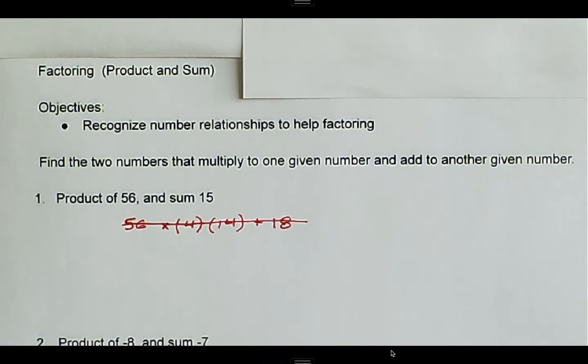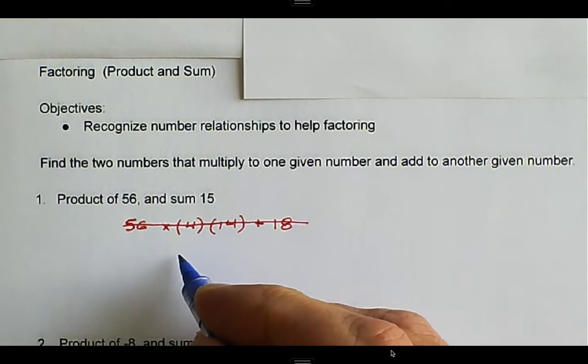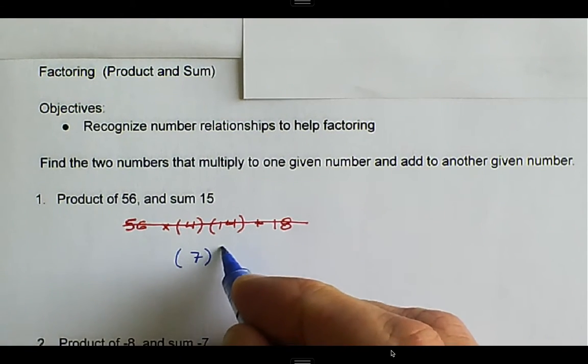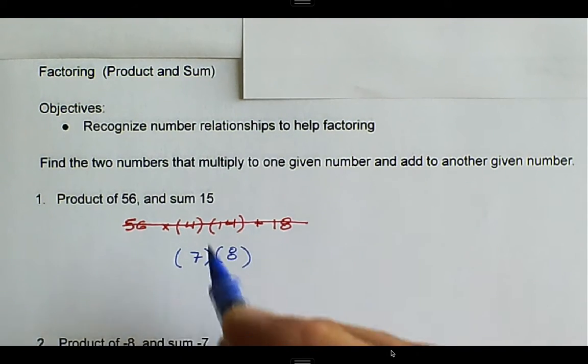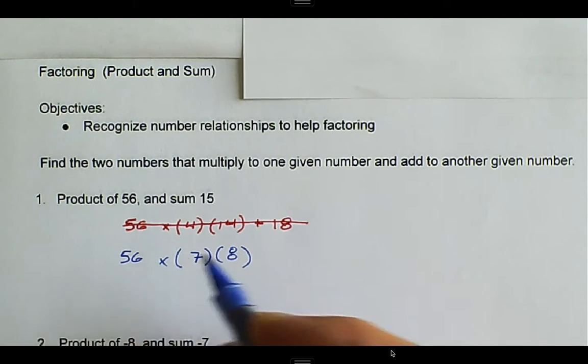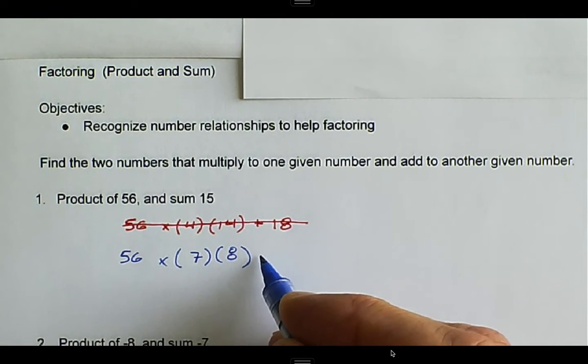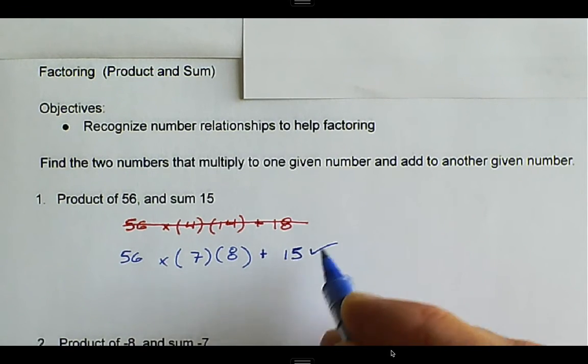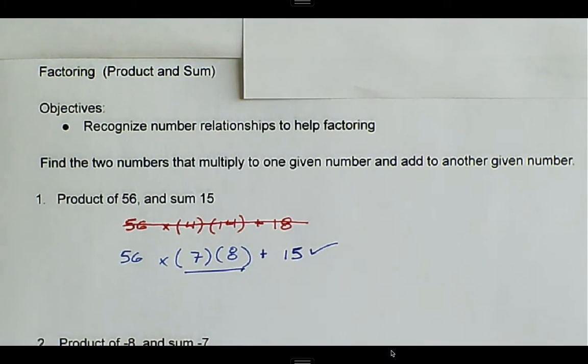We have to try it again. Two other numbers that we could try, in this case, we're going to try 7 and 8. 7 multiplied by 8 is still 56, and 7 plus 8 is 15. So the two numbers that we were looking for are 7 and 8.